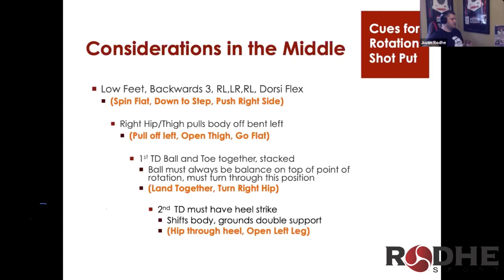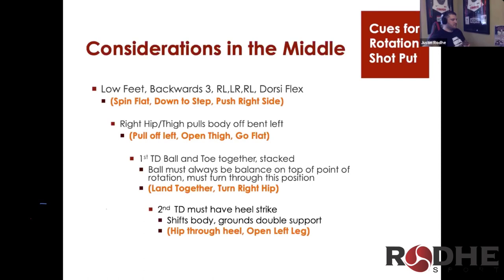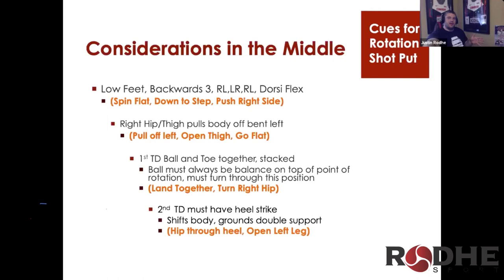Second touchdown must have a heel strike. When that second foot comes down, you must come into a mid-foot and heel touch for at least one frame before going back to the toe for the strike. This heel contact rounds the body on the left side, shifts the torso weight forward, and gives you the point to rotate the release arm around. If the heel doesn't come down, almost always the ball comes out early. The cue is 'push with your hip through the heel' — use the left hip to push the foot down and the body into the bent leg.